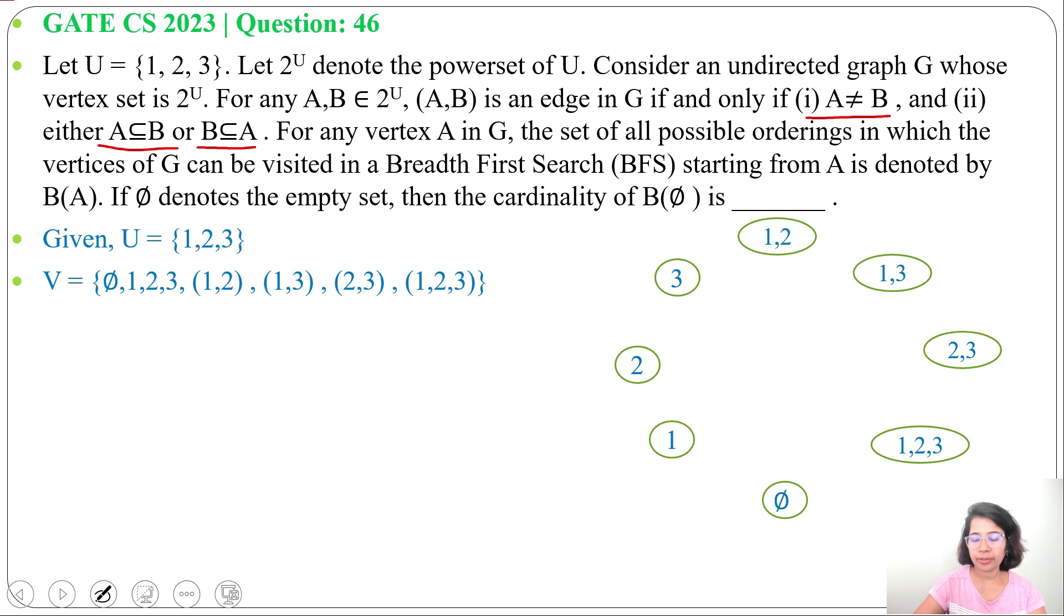φ is subset of every other vertex. So there will be an edge from φ to 1, 2, 3, then {1,2}, {1,3}, {2,3}, and {1,2,3}. φ is connected with all other 7 vertices. There are total 8 vertices. So starting from φ, different BFS orderings possible is 7 factorial.